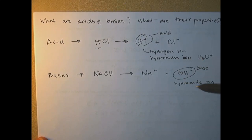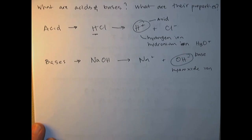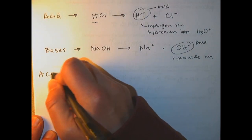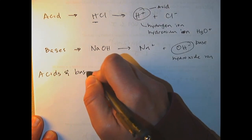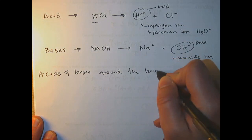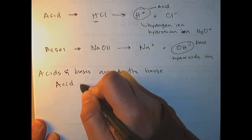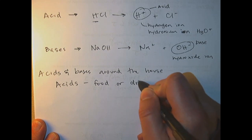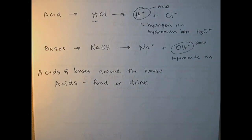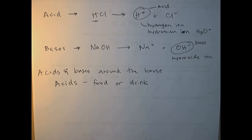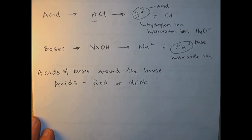Each solution has some combination of both of these. But if you have more H+, you're an acid; if you have more OH-, you're a base — which we'll come back to later. Around the house, you can identify acids and bases pretty easily — you probably interact with them every day. Acids tend to be things that you eat or drink. Lemon juice and orange juice are acids, and most things that you drink are acidic in some way, whether it's Gatorade or soda.